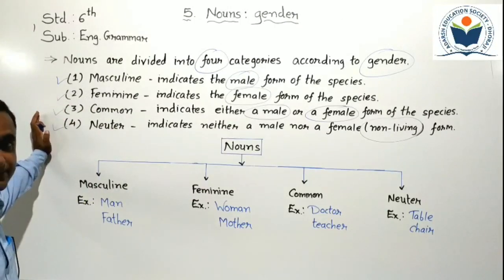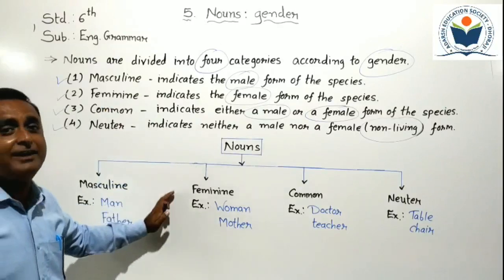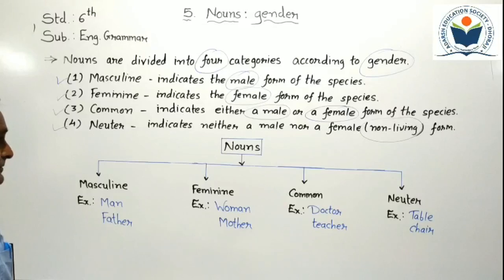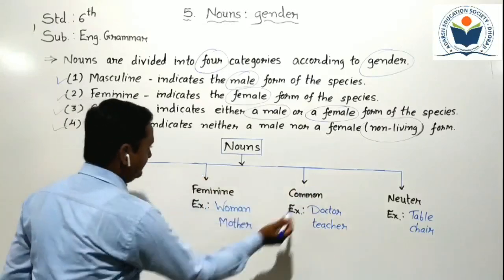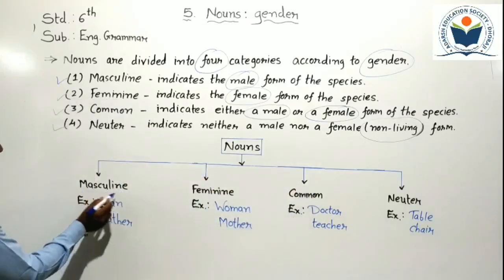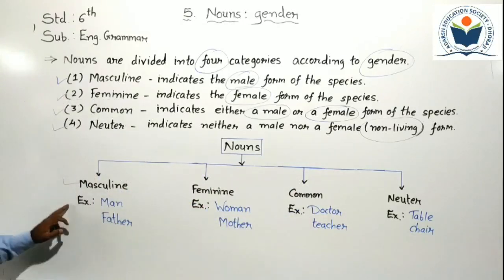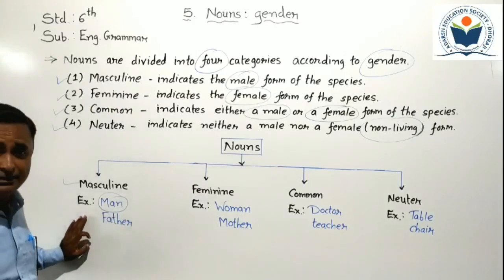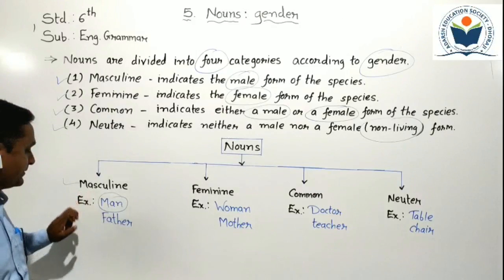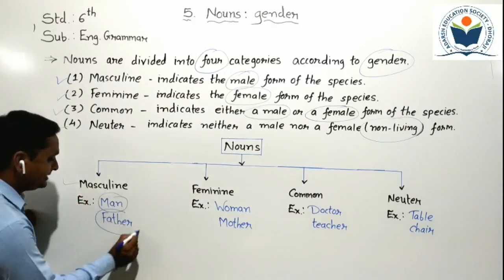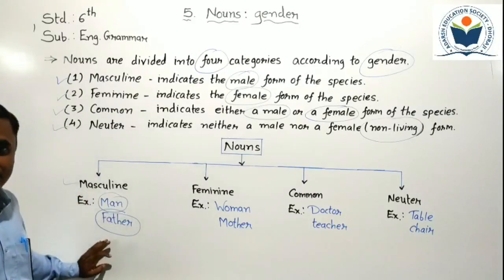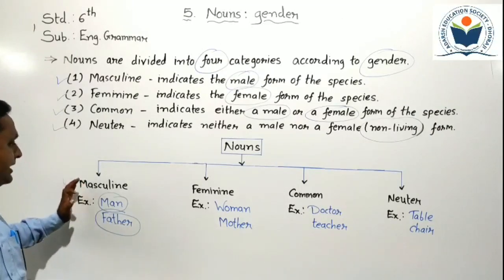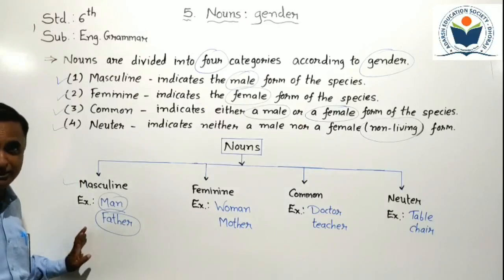I wrote a chart here to understand nouns based on gender. Four types of gender are given here. First one is masculine gender. Example: men — the word men is related to male, so it becomes masculine gender. Like that, father — the word father is also related to male, so it is known as masculine gender.